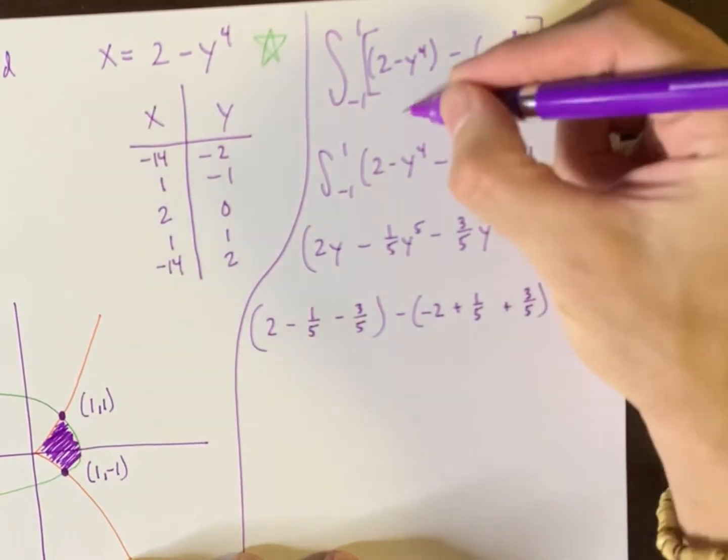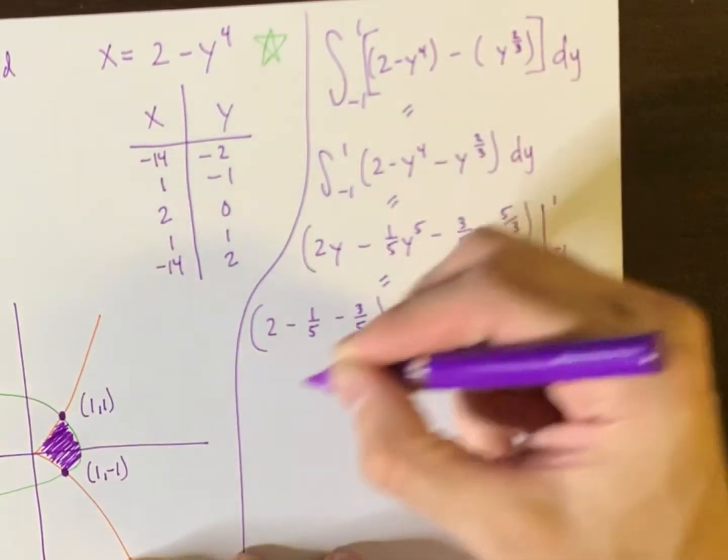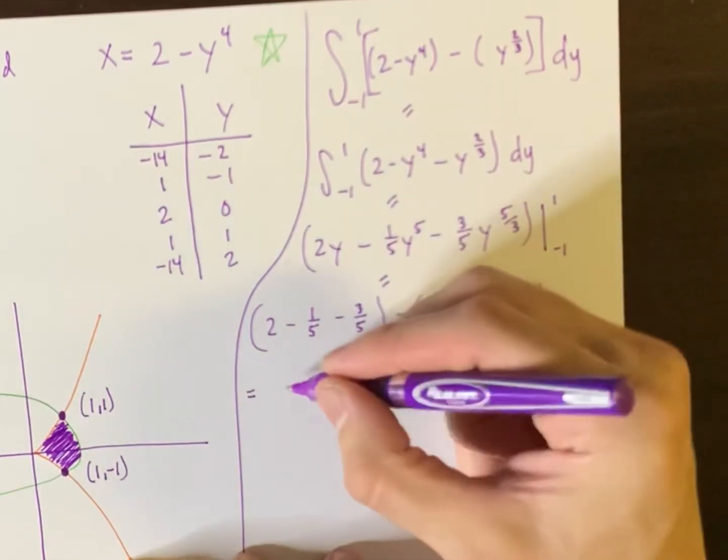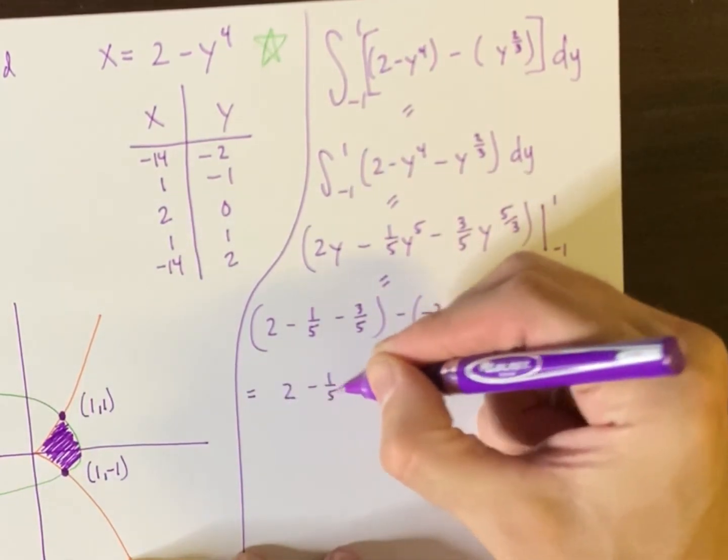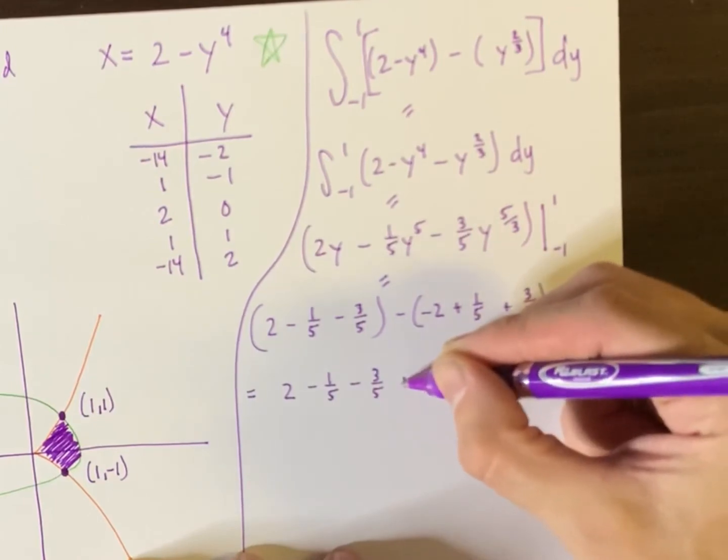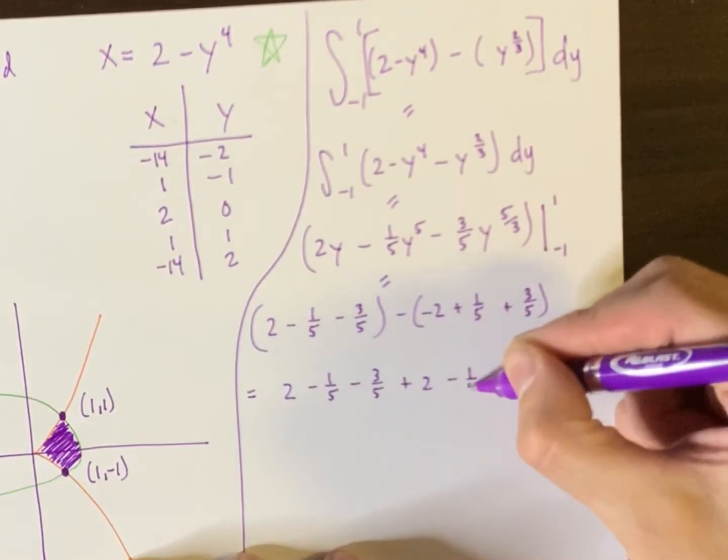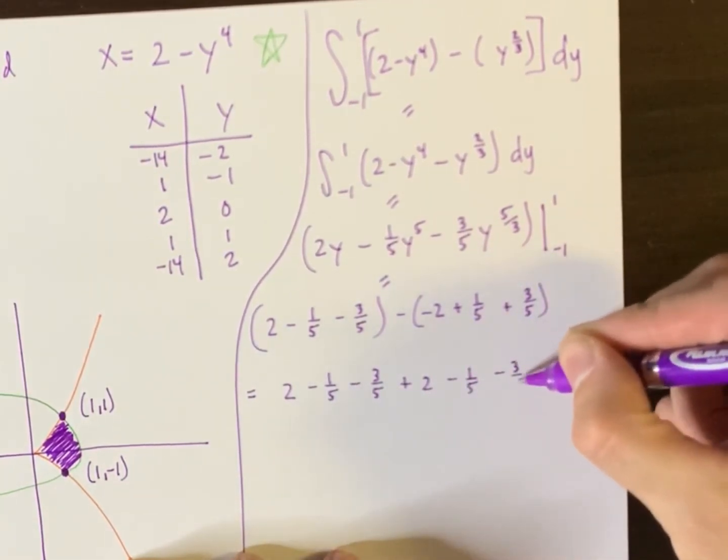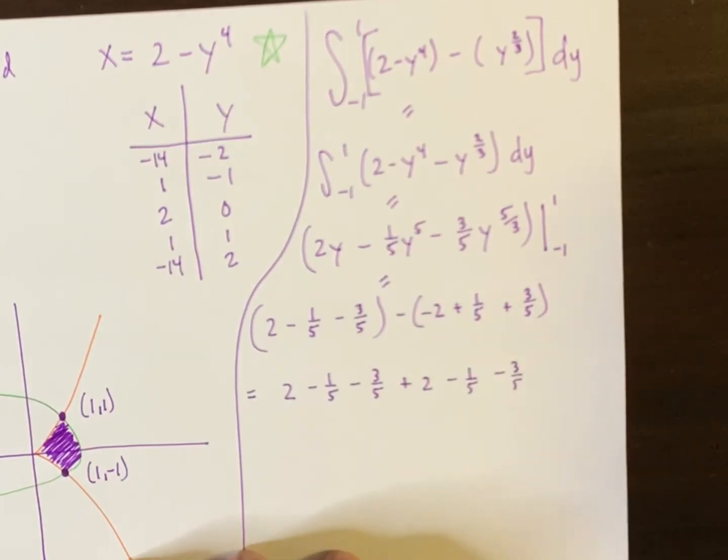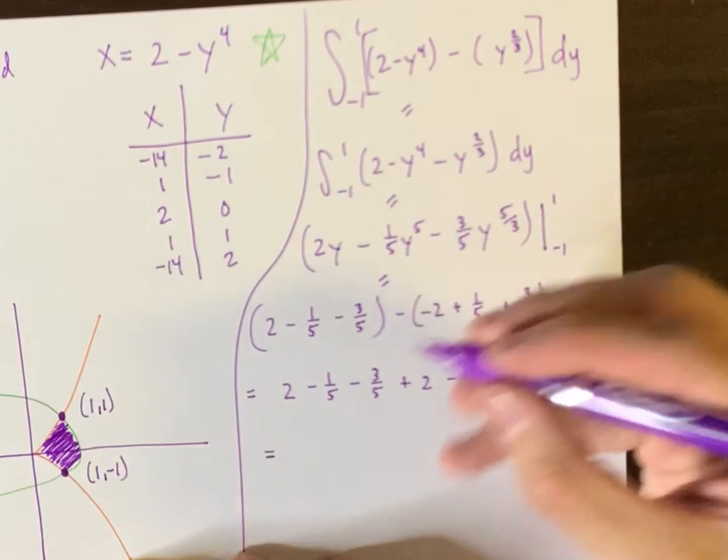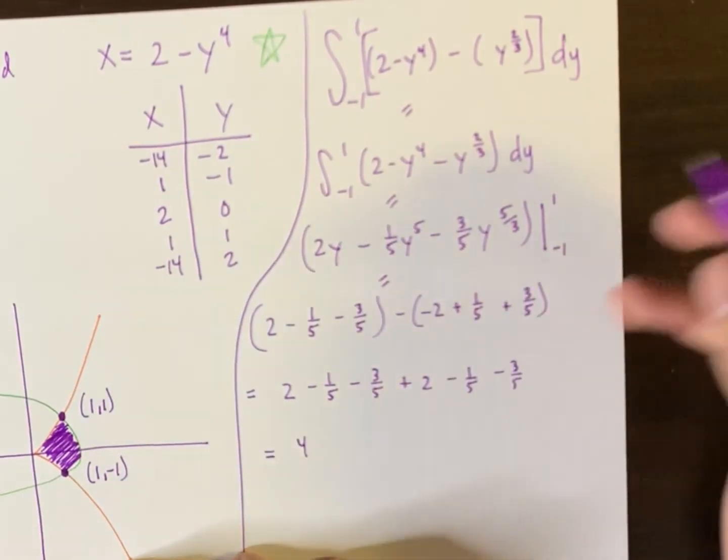And let's see. So this equals, equals, equals, and so this equals. So we have two minus a fifth minus three fifths plus two minus a fifth minus three fifths. Does anything eliminate? Darn it. Nothing goes away. It's all right.